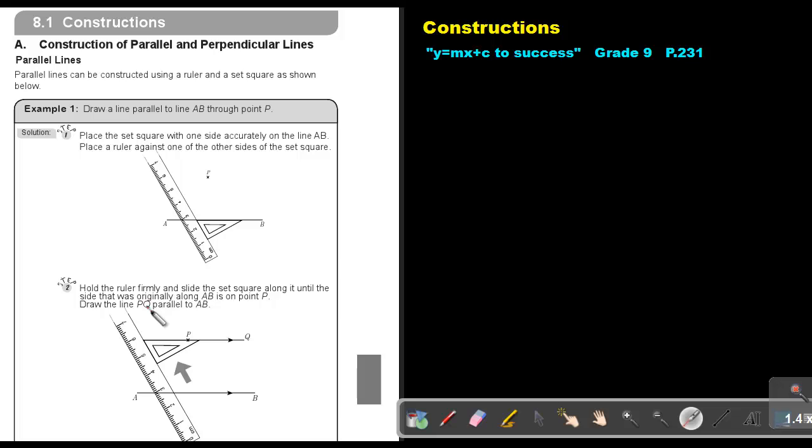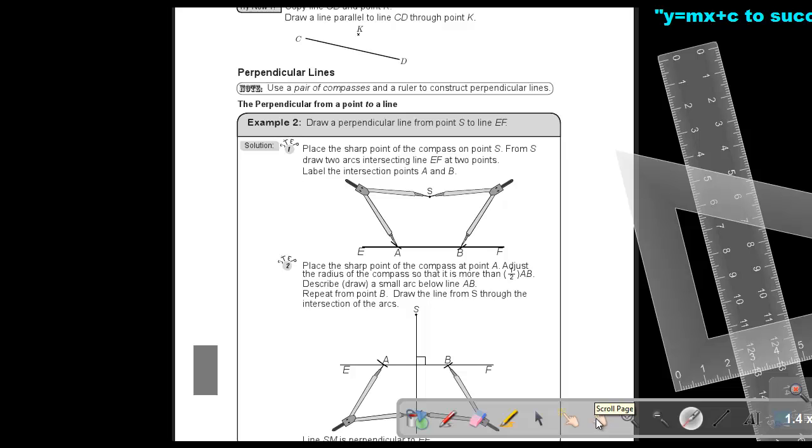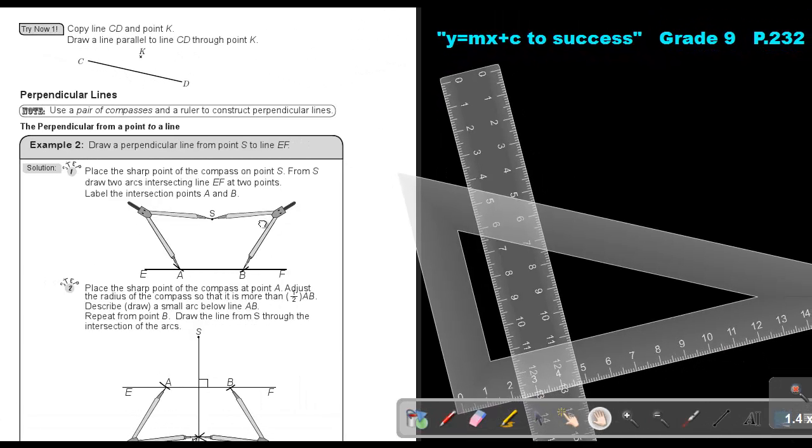Draw the line PQ parallel to AB. So just then connect this point, you can just basically draw a line there and extend it. Okay.